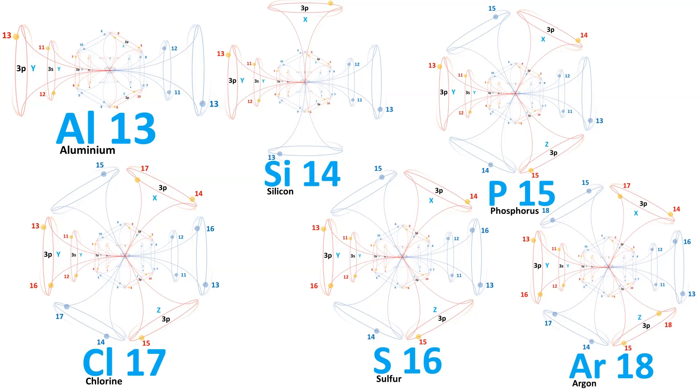The exploration then proceeds to the 3p orbitals, akin to the 2p orbitals, consisting of three dumbbell-shaped orbitals: 3px, 3py, and 3pz. Each of these can hold two electrons and two positrons.